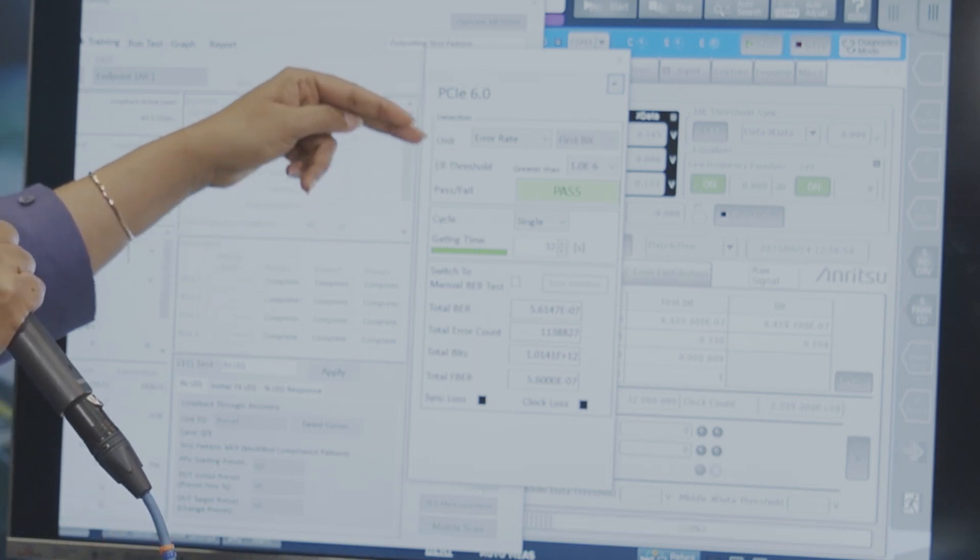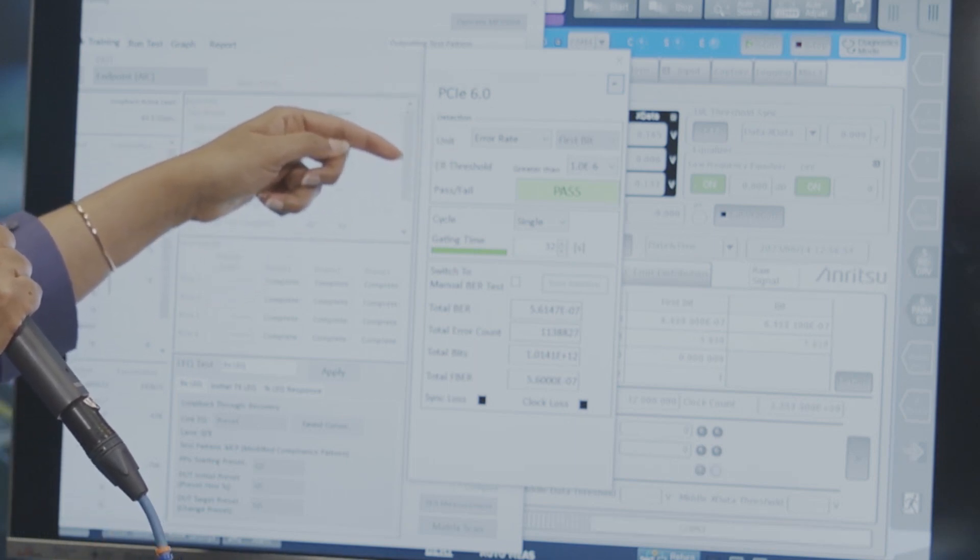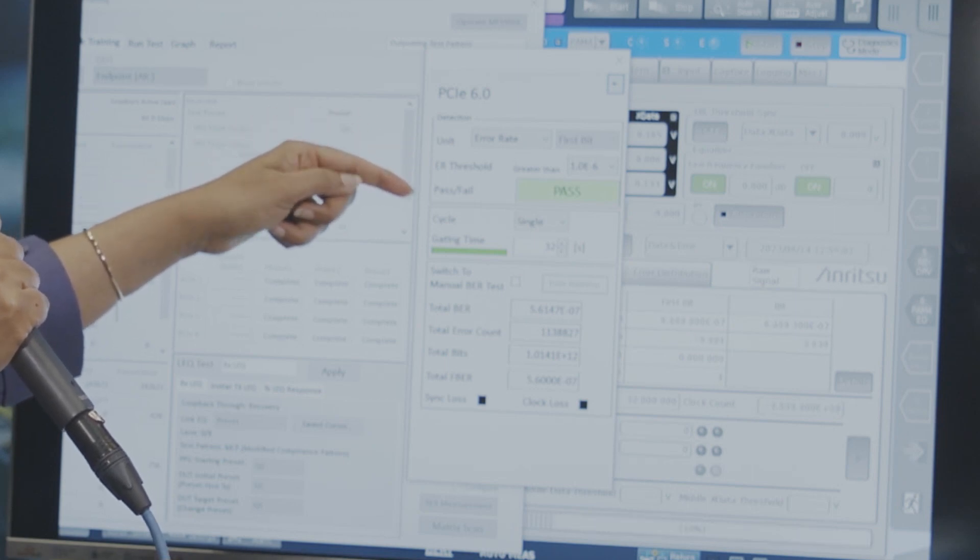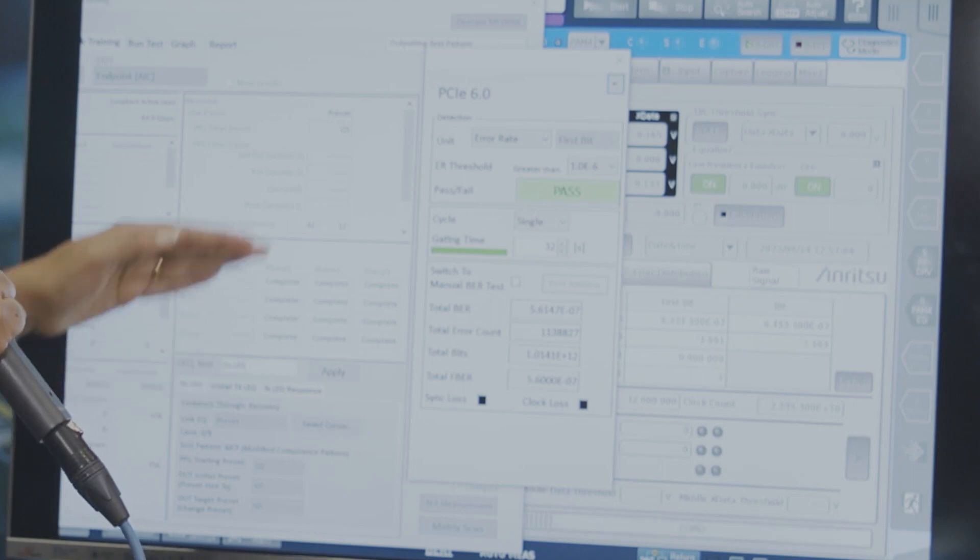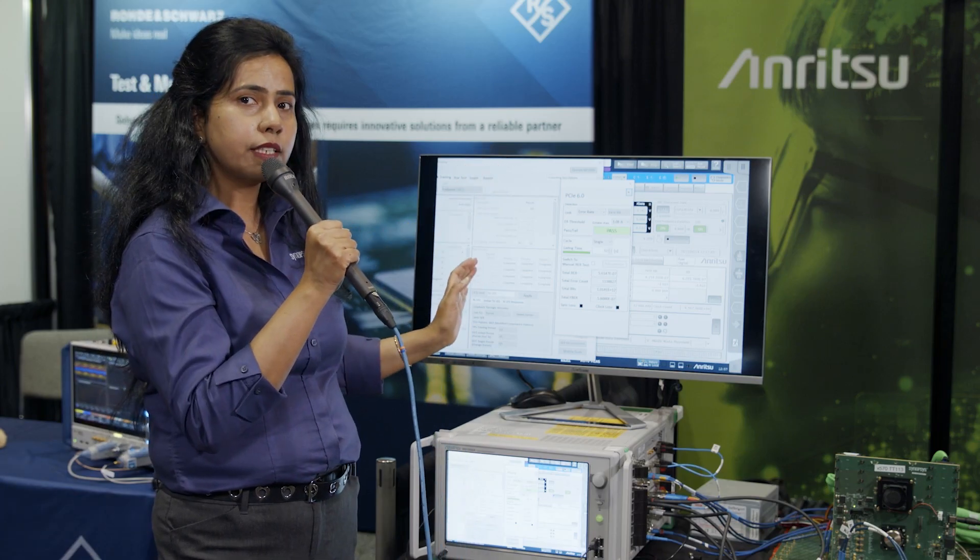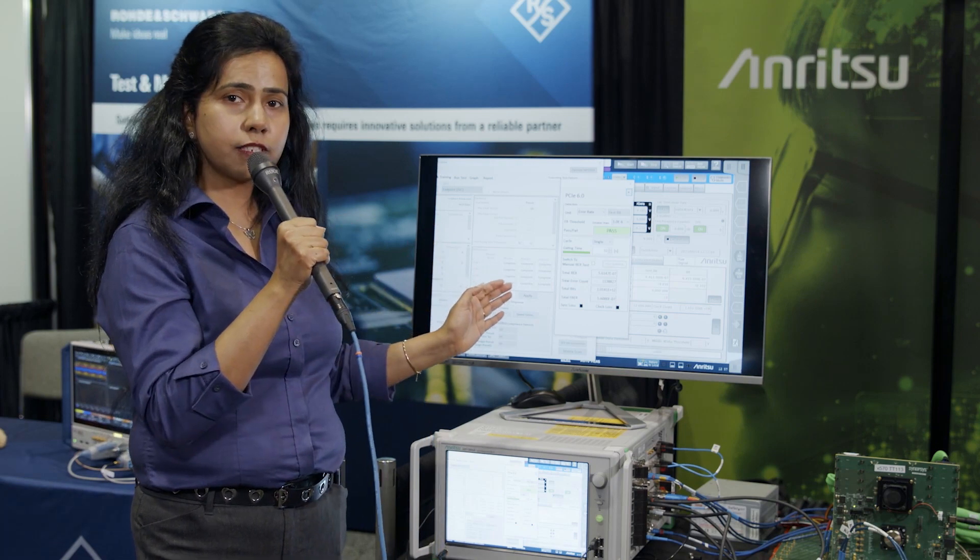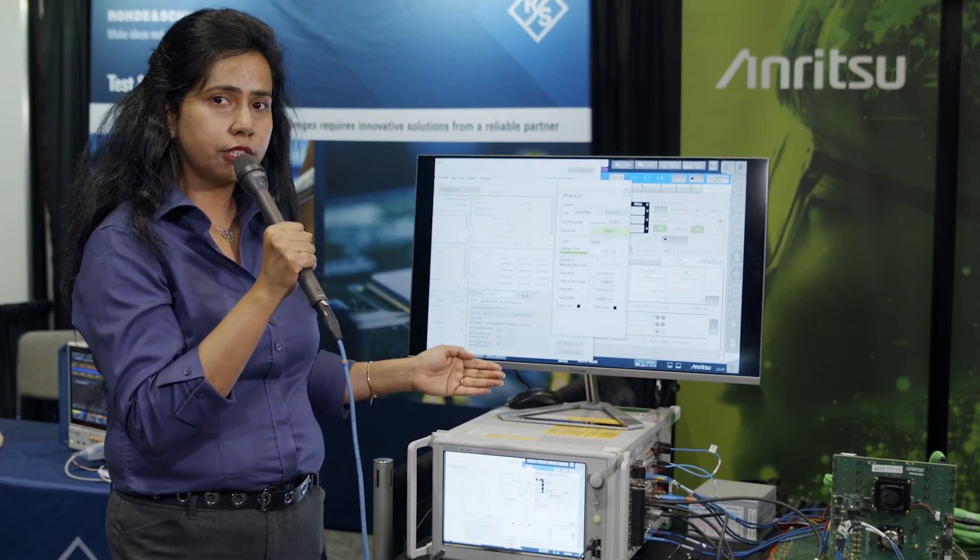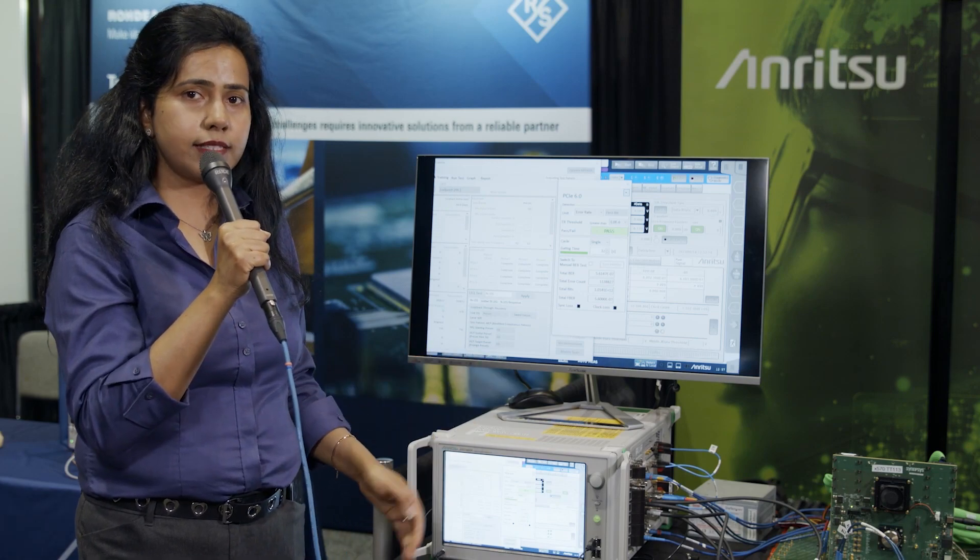The spec itself calls for 1 in minus 6 for the bit error rate. Here in the graphical interface you can see that all of these tests have been passed. Basically what we are showcasing here, the world's first receiver link training test has been completed through all generations as well as Gen 6.